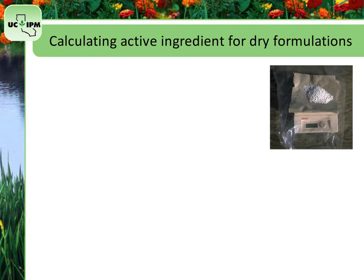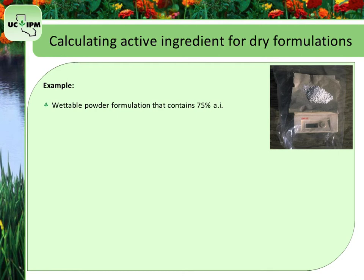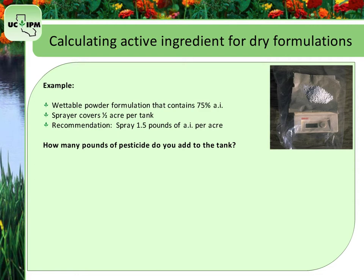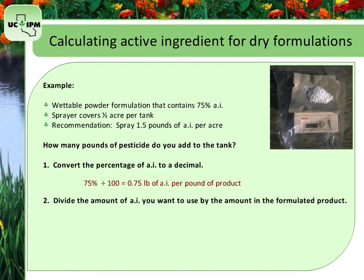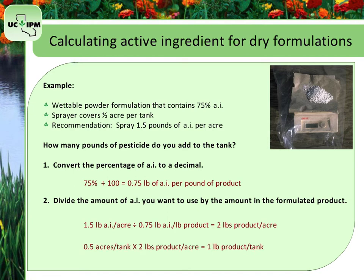Now, instead of a liquid formulation, say you have a wettable powder formulation that contains 75% active ingredient. Your sprayer still covers half an acre per tank and you have a recommendation to apply 1.5 pounds of active ingredient per acre. How many pounds of pesticide do you add to the tank? First, convert the percentage of active ingredient to a decimal: 0.75 lb AI per pound of product. Then divide 1.5 lb AI/ac by 0.75 lb AI/lb formulation, giving 2 pounds of product per acre. For a tank covering 0.5 acres, multiply 0.5 by 2 lb/ac to get 1 pound of product per tank.